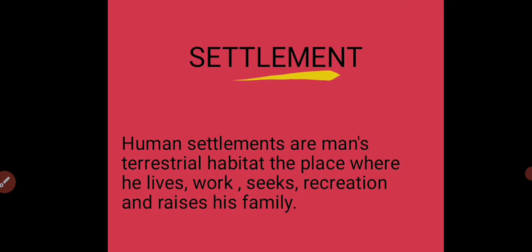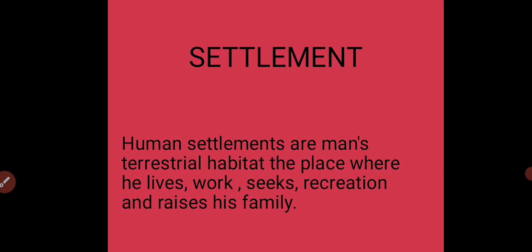What is settlement? Human settlements are man's terrestrial habitat — the place where he lives, walks, seeks recreation, and raises his family. In other words, settlement is the place where a human being lives, does his work, enjoys himself, and builds his family. Terrestrial means on the land.